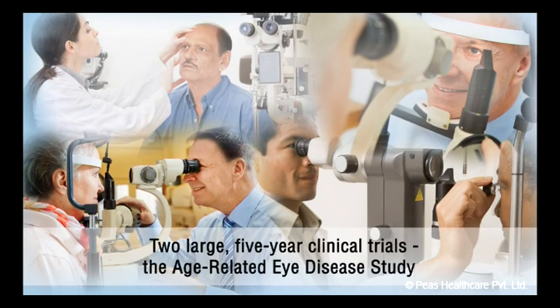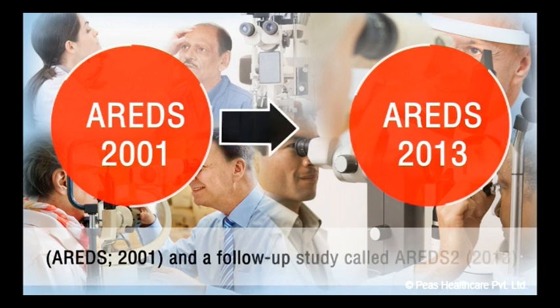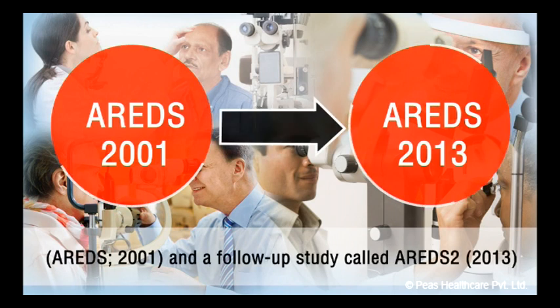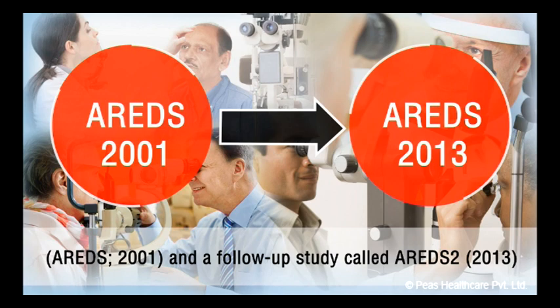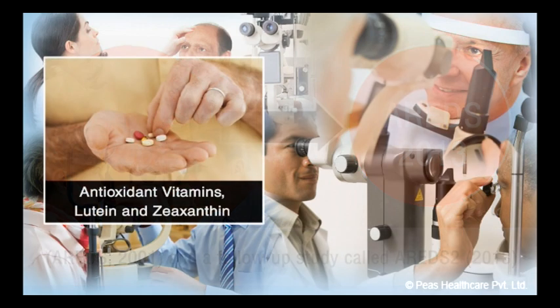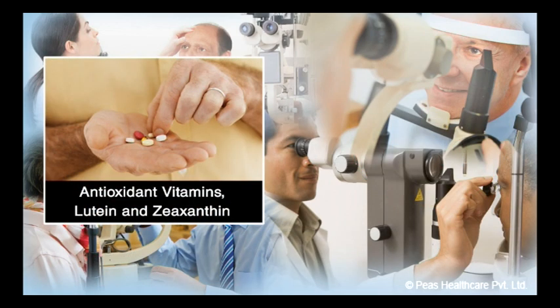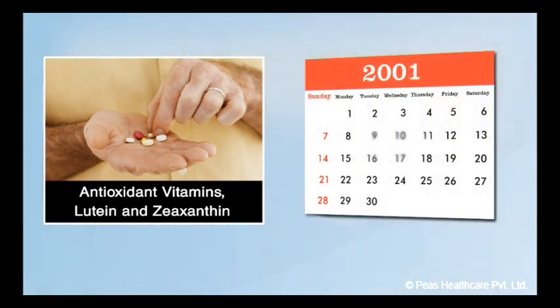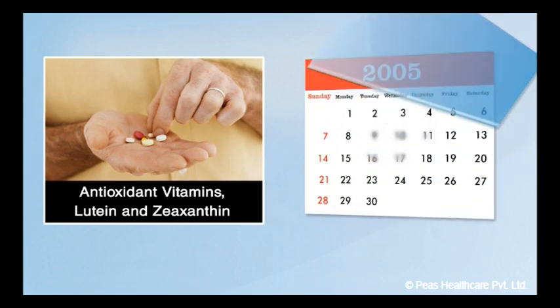Two large five-year clinical trials, the Age-Related Eye Disease Study or AREDS-2001 and a follow-up study called AREDS2-2013, have shown nutritional supplements containing antioxidant vitamins, lutein and zeaxanthine can reduce the risk of dry ARMD progressing to site-threatening wet ARMD.